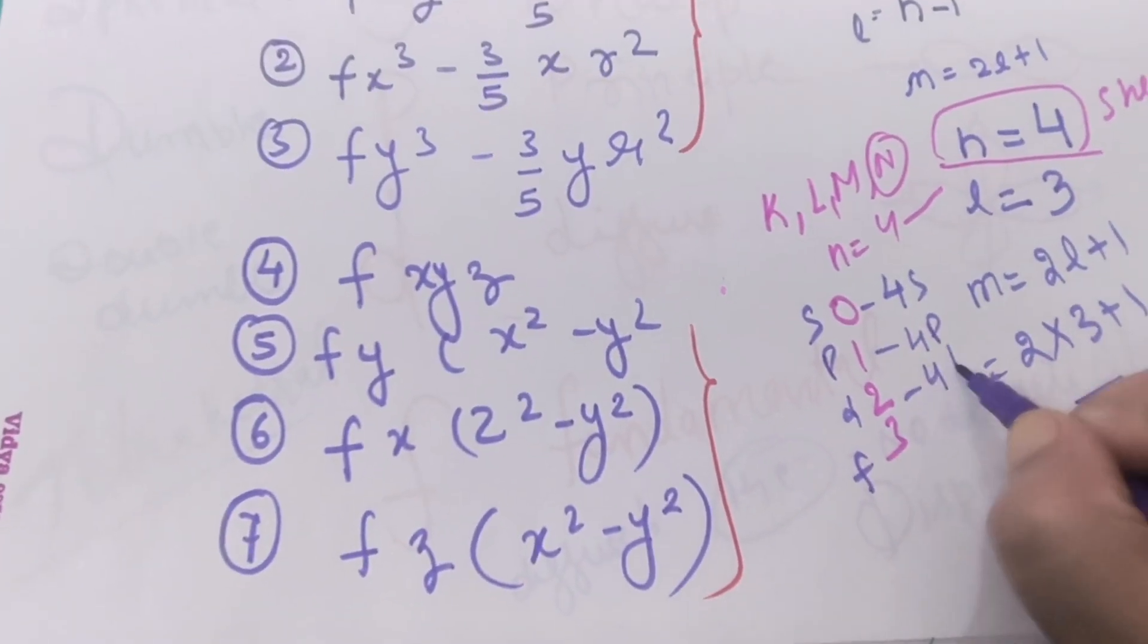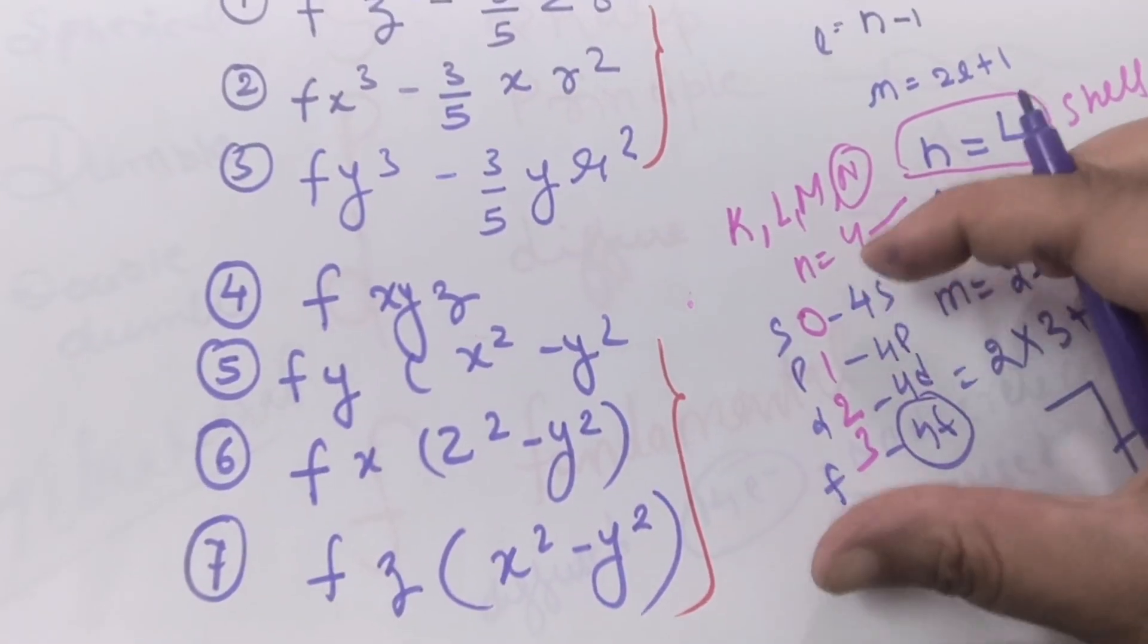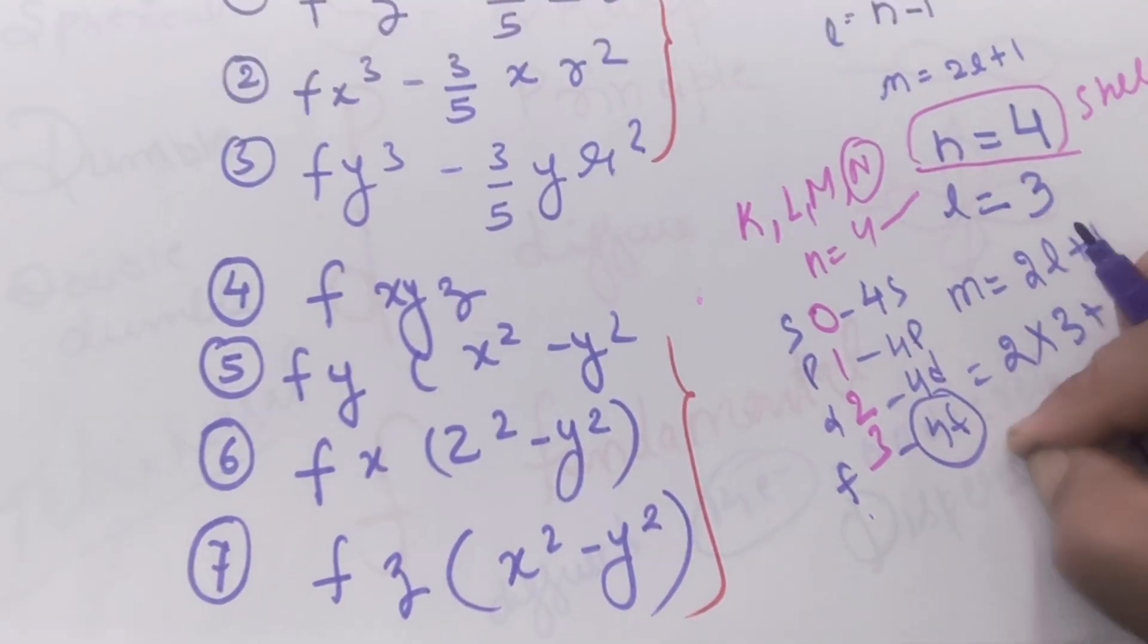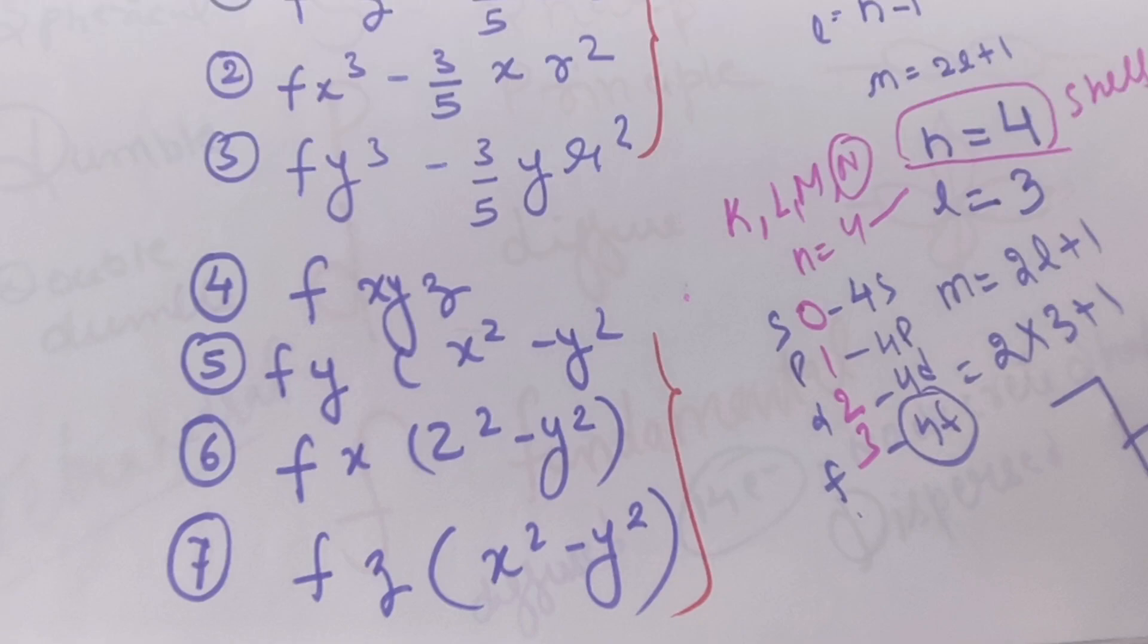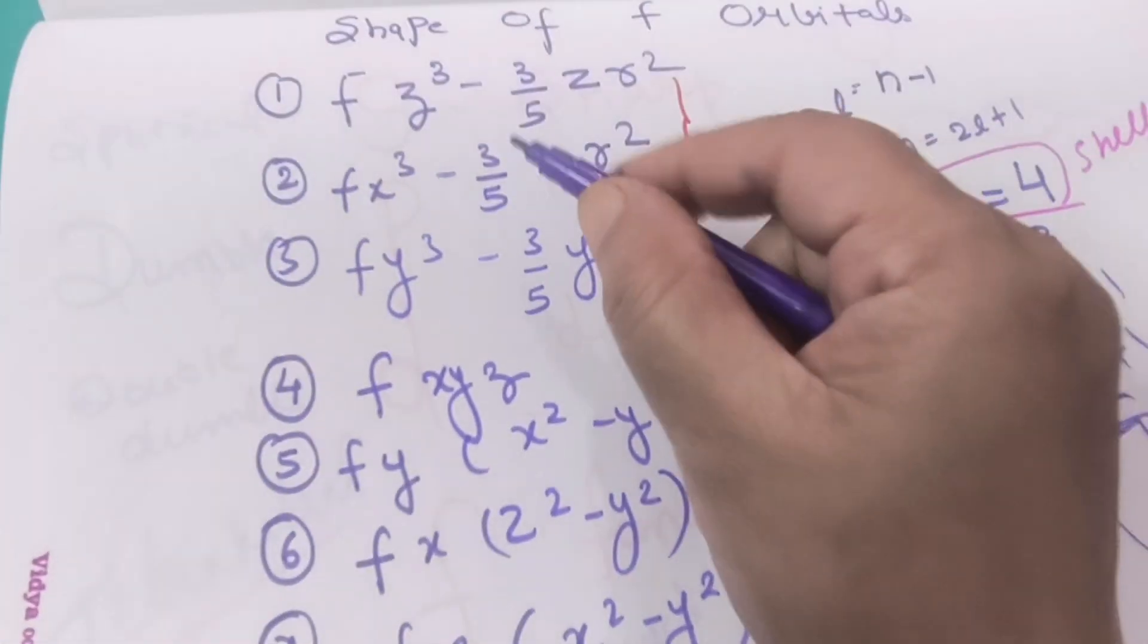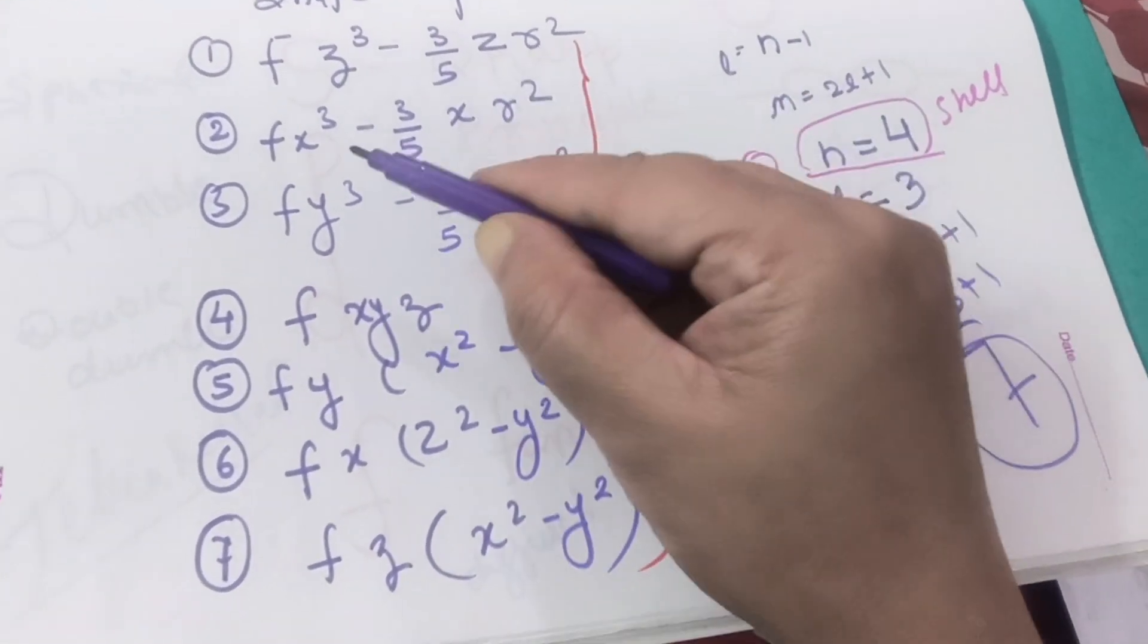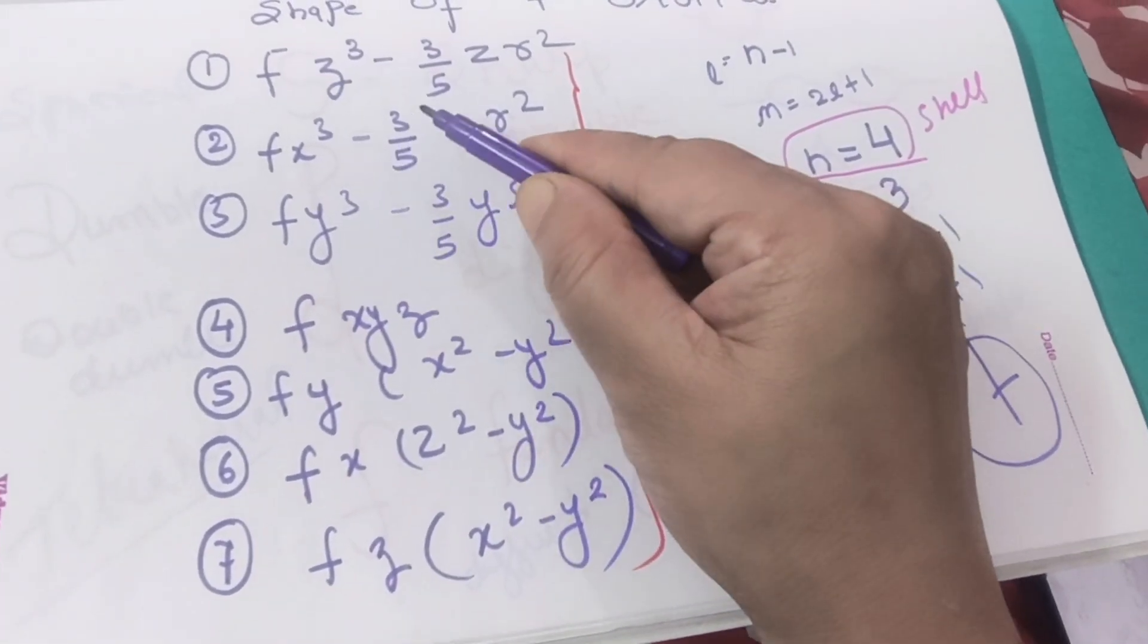What are these four sub shells? 0, 1, 2, 3. So we will have s, 0 stands for s, p, d, and f. We will have 4s, 4p, 4d, and 4f. It means that when n is equals to 4, it will have four sub shells. That will be 4f and it will have seven orbitals.